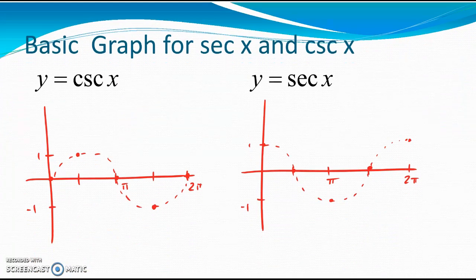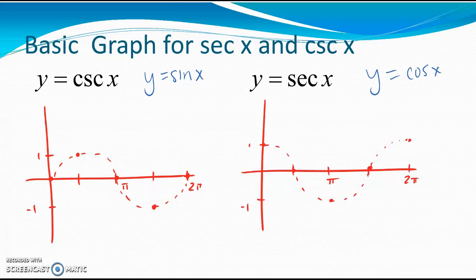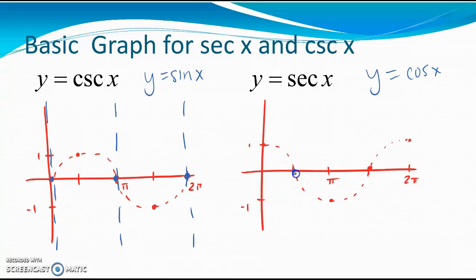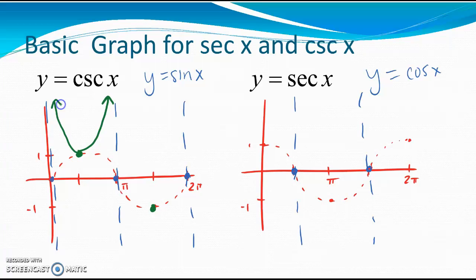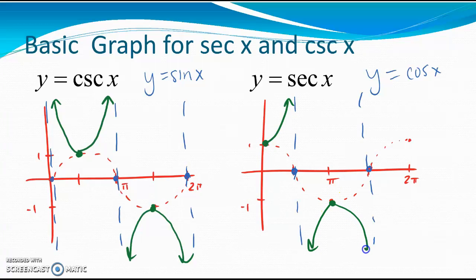Looking at the basic graphs here: on the left, the dotted graph is y equals sine of x, and on the right the dotted graph is y equals cosine x — both basic functions with no shifts. When I graph a basic cosecant or secant graph, I identify where the previous zero values are, and those become vertical asymptotes shown as dotted vertical lines. Then the actual graph — the part in green with thicker lines — takes off from the previous max or min points, drawn as little parabola shapes stuck between those asymptotes.